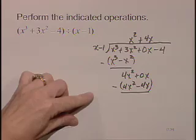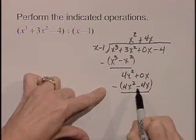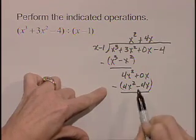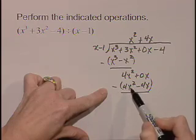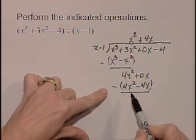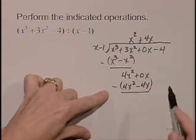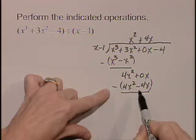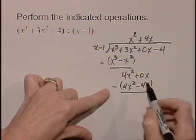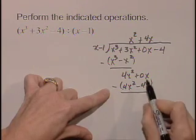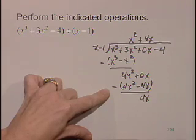We're going to subtract. I like to put the parentheses so that we make sure we follow and watch our negative signs. 4x squared minus 4x squared, that term is gone, drops out. 0x minus a minus 4x becomes a plus. So 0x plus 4x is 4x.